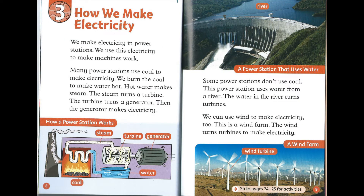Chapter 3: How we make electricity. We make electricity in power stations, and we use this electricity to make machines work. Many power stations use coal to make electricity. We burn the coal to make water hot. Hot water makes steam. The steam turns a turbine. The turbine turns a generator. Then the generator makes electricity.